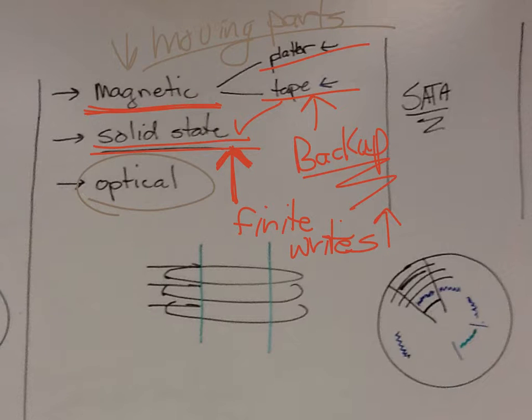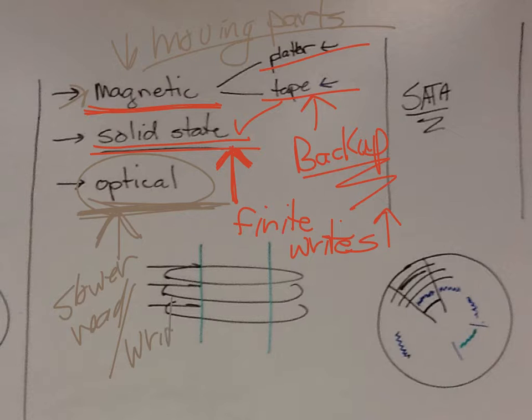Optical, we burn those spots into the disk. Pretty reliable, you know, as far as magnetic field won't change them. So that's pretty reliable. A little slower, in most cases, slower to read and write.